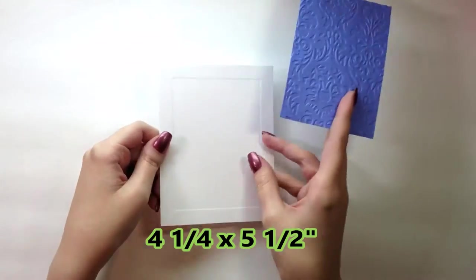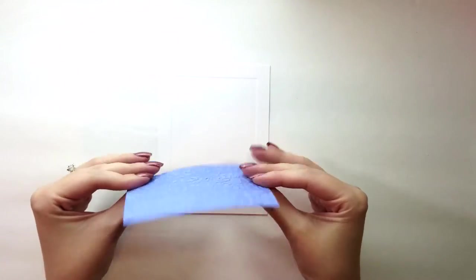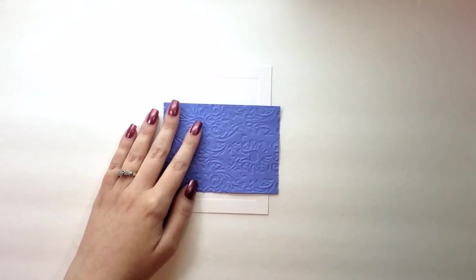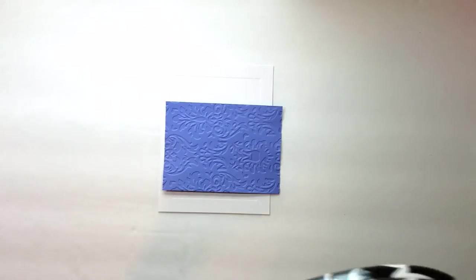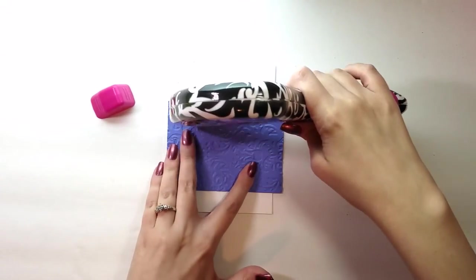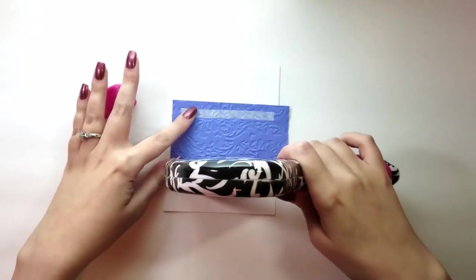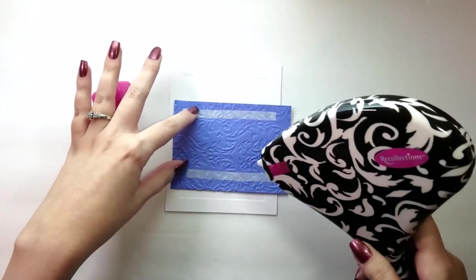I'm just going to take a four and a quarter by five and a half size sheet of white paper or cardstock and use my ATG gun and glue what I've just embossed onto the center of the white paper.